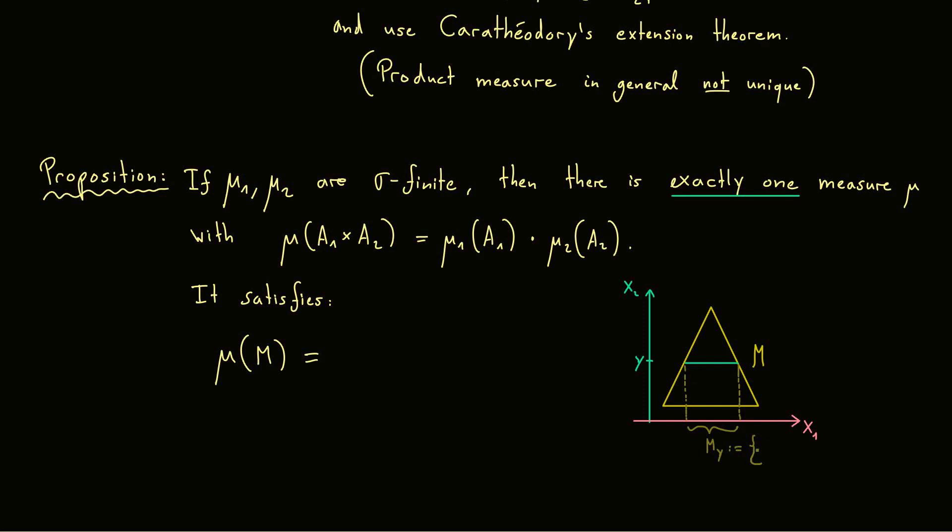And exactly this set here I want to call M with index y. Of course I can also write down the formal definition which would be all lower case x1 in the capital X1 with the property that x1 and y as a pair lies in M. Still I think the picture here is more helpful to visualize what happens. Now the formula tells you okay just measure the length of this line. So we measure this in the measure mu1 in X1. Which means mu1 of M_y.